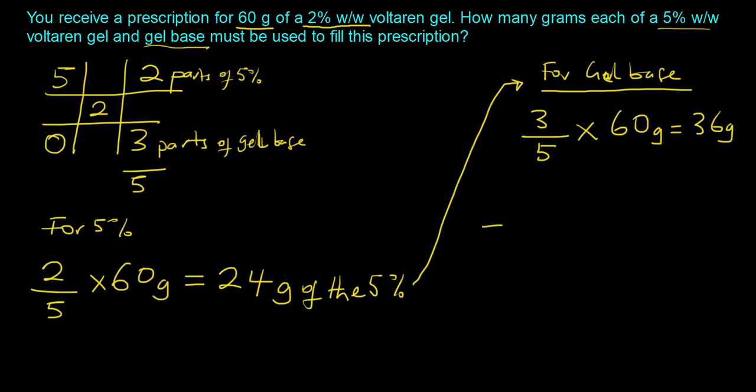However, there is a much quicker way. What you would do is you could take the total quantity that you are preparing, which is 60 grams, and because there are only two components, we will subtract the quantity of the 5%, which is 24, and that should still give us 36 grams. Alright, so that's how you do the problem, but let's just go through the high points.